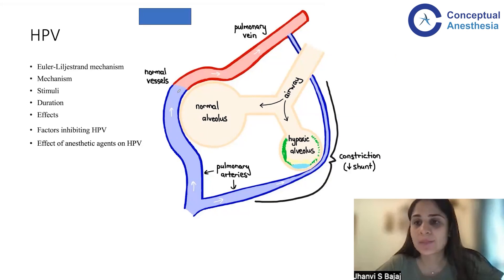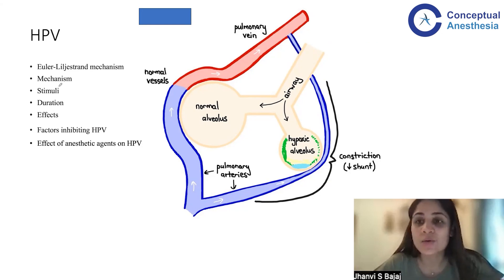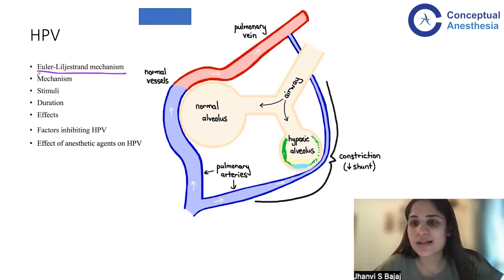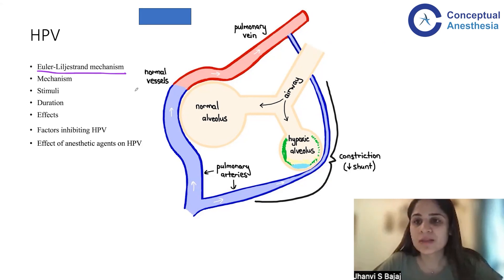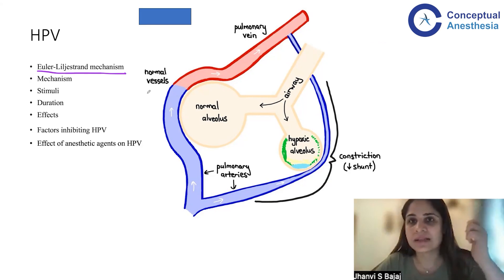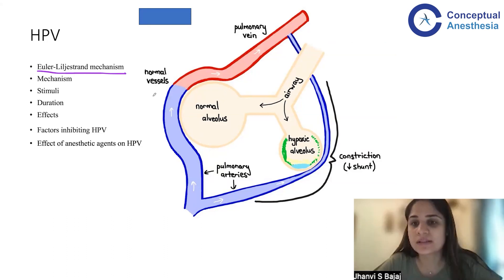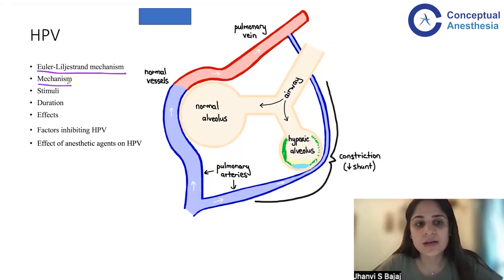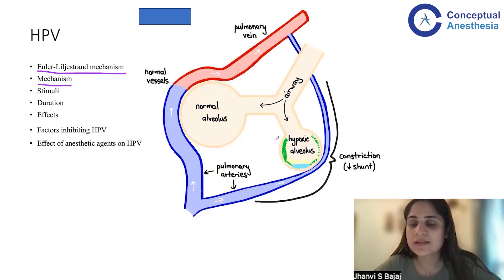For the HPV answer, I divide my response into approximately seven to eight points. The first point: hypoxic pulmonary vasoconstriction is also called the Euler-Liljestrand mechanism. I would underline this in the exam so the examiner knows I have studied the theory thoroughly — this kind of specific knowledge immediately impresses the examiner. The second point addresses the mechanism of HPV.